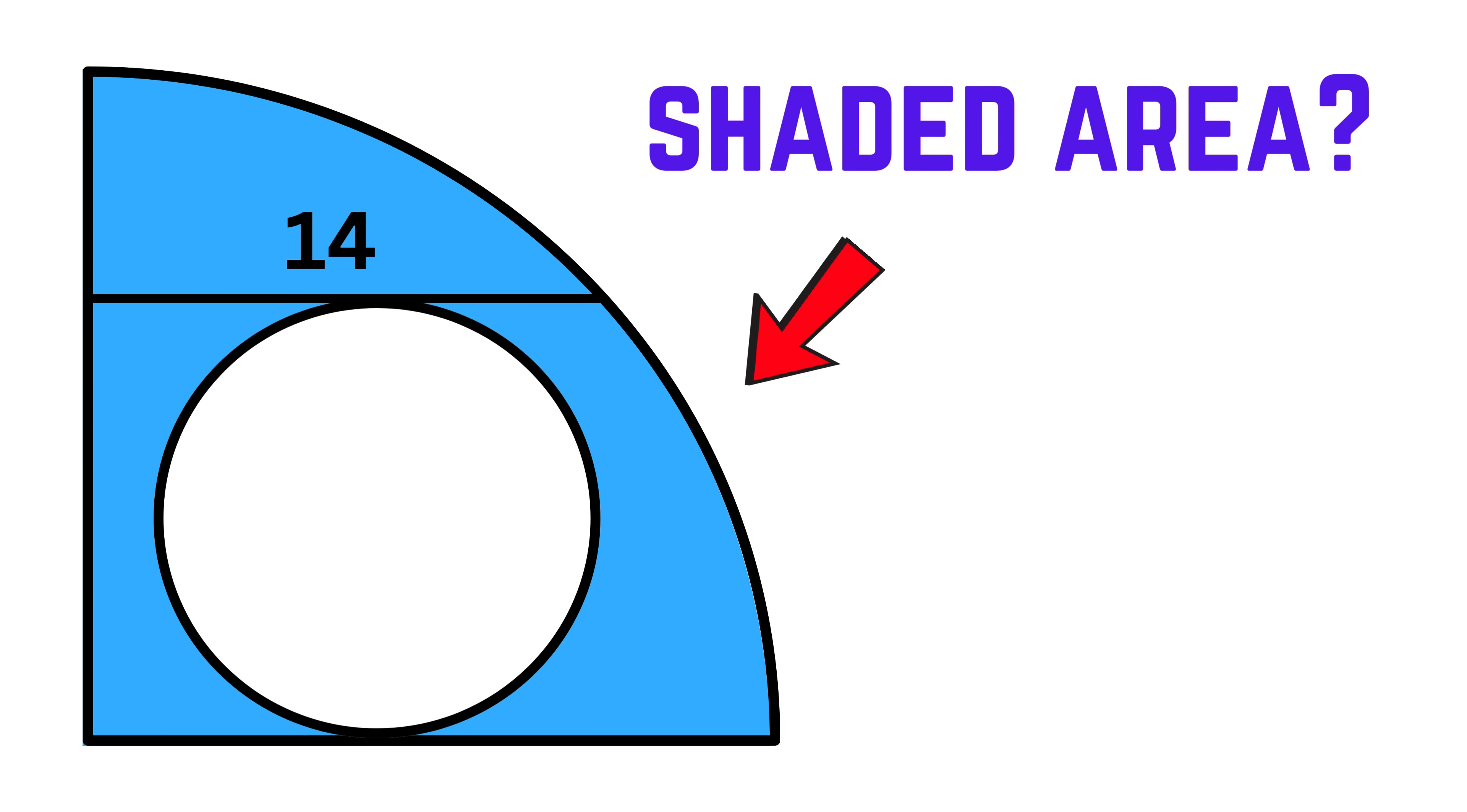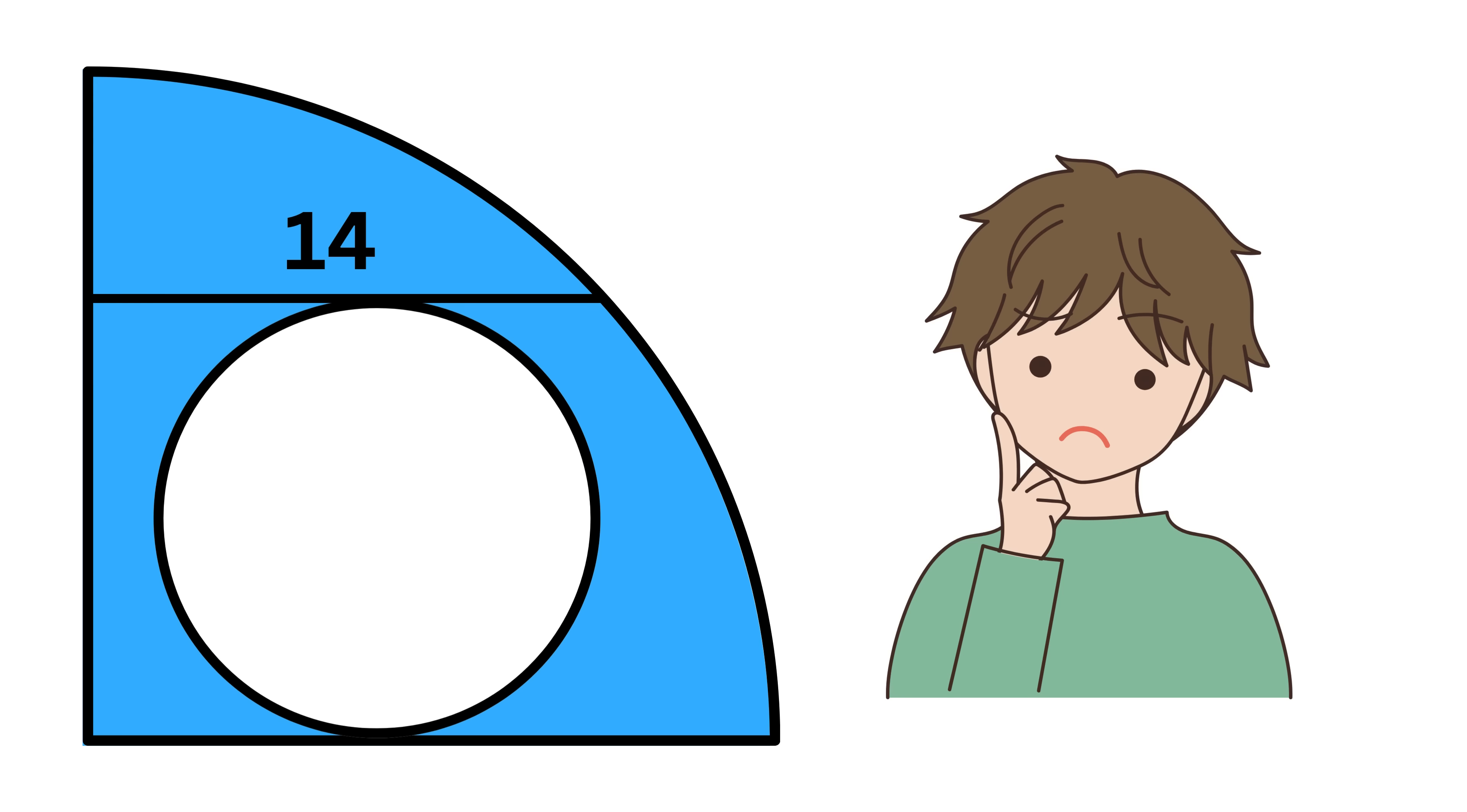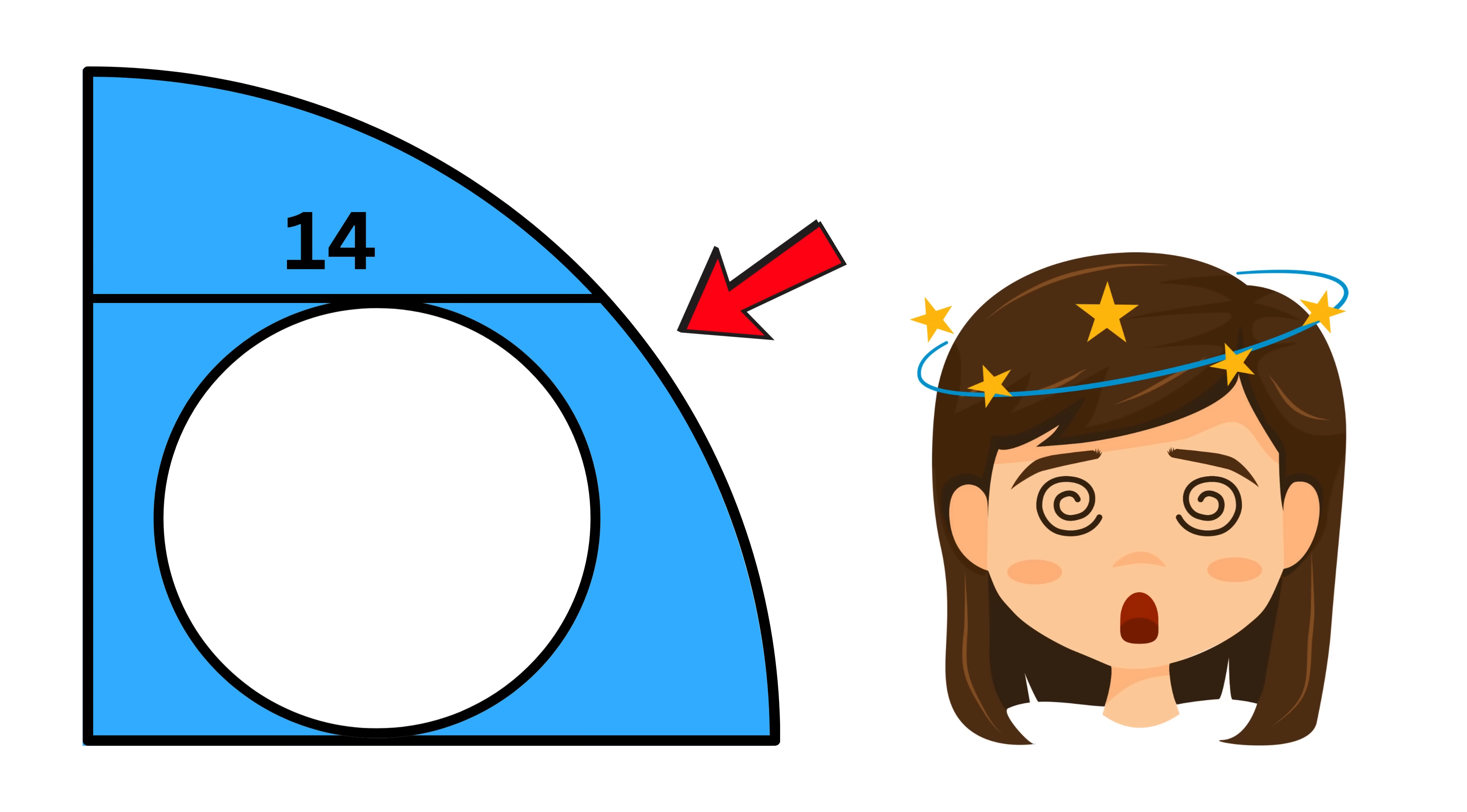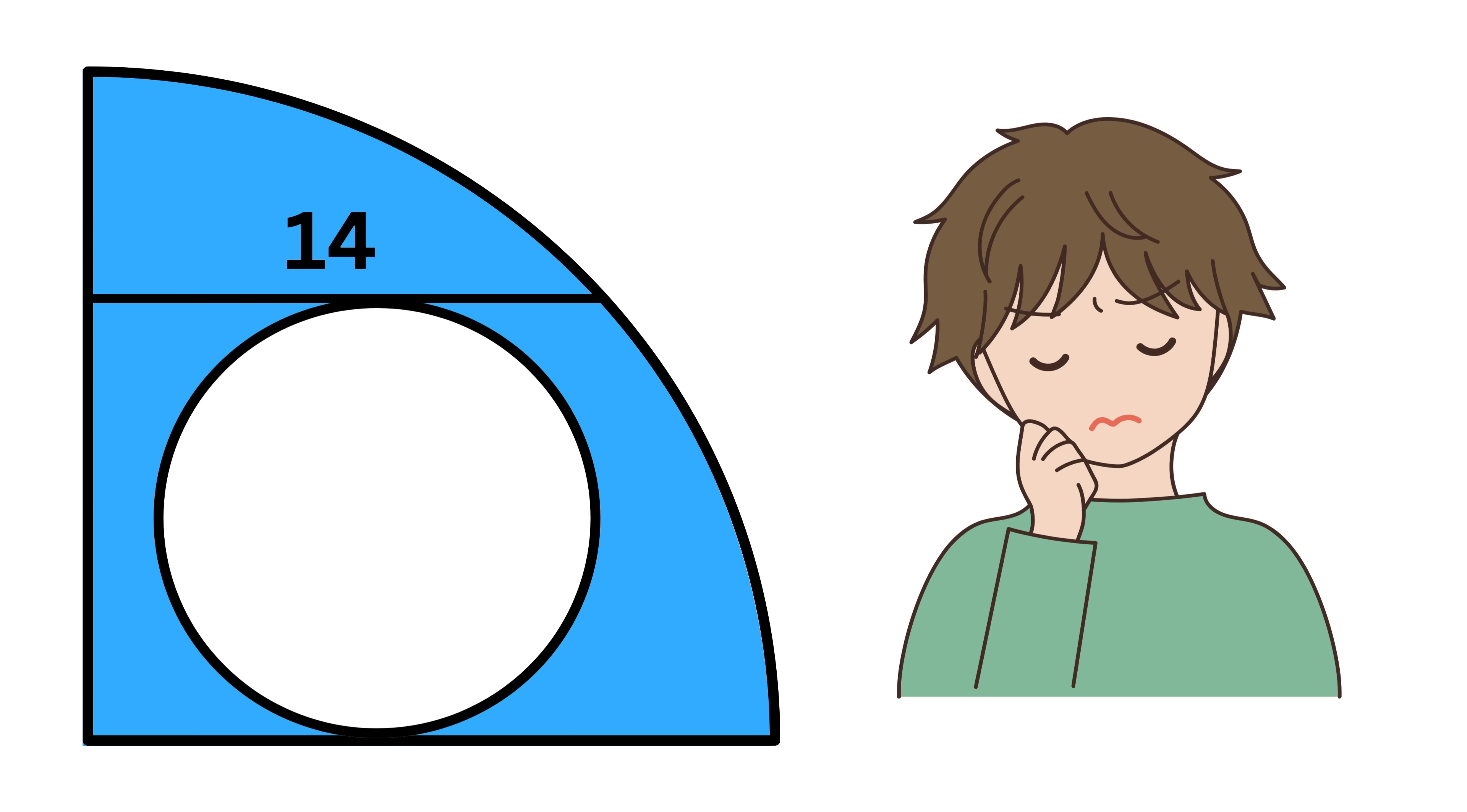Now our job is simple: we need to find the area of the blue shaded region. What is so shocking about this question is that even though we don't know the value of the radius of this full circle or this quarter circle, we still need to find out the exact area of the blue shaded region. Don't you think this is an impossible looking question?